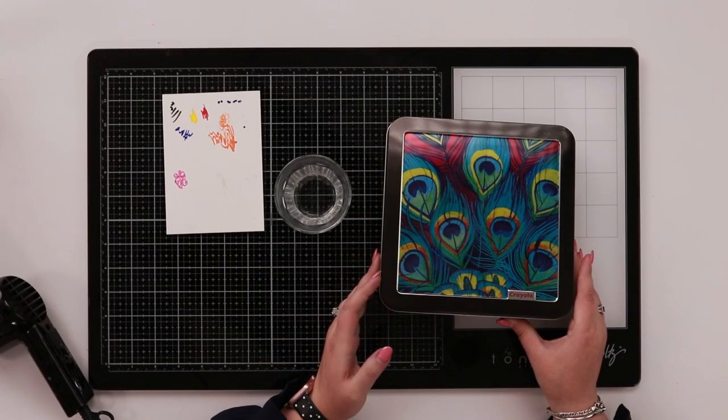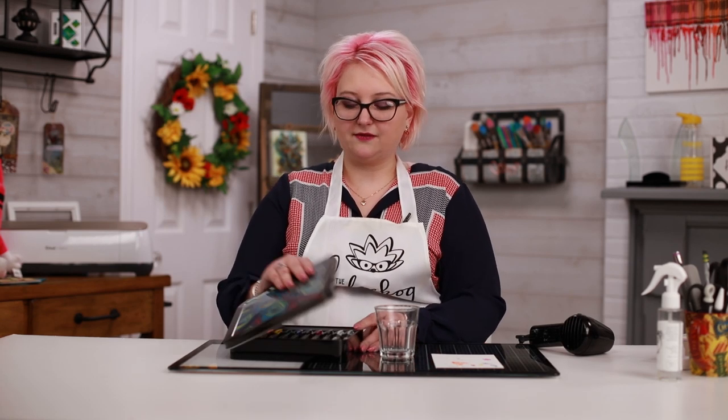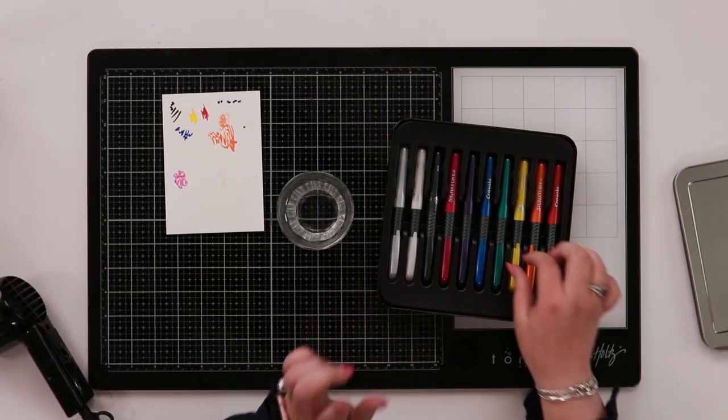Hi everyone, welcome back to the Crayola takeover with Hedgehog Hollow. Today we have a quick and easy make for you using the Crayola pearlescent paint markers. Here I have a really cool glass. I thought we'd make a tea light holder with them. So I'm going to open these up. I've already pre-primed them. They're super easy to prime. They have a white tip, you just kind of bounce them up and down.